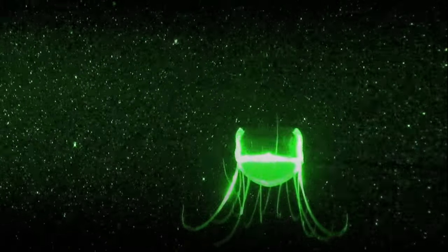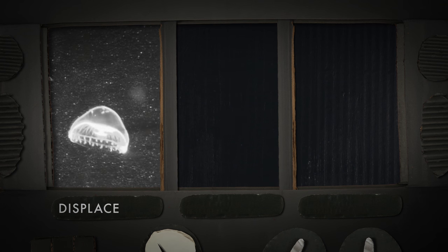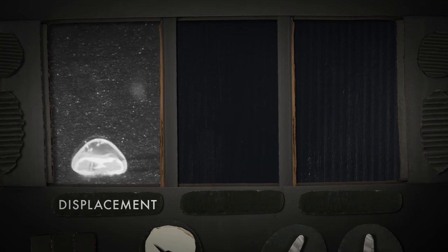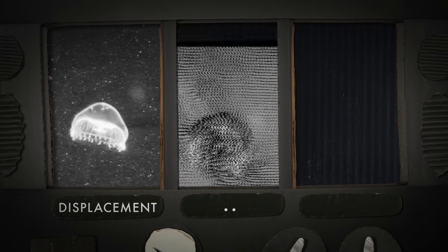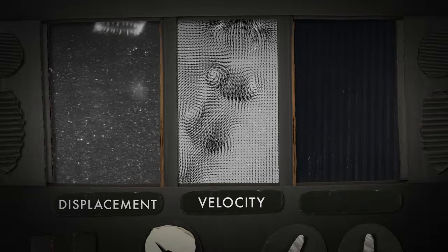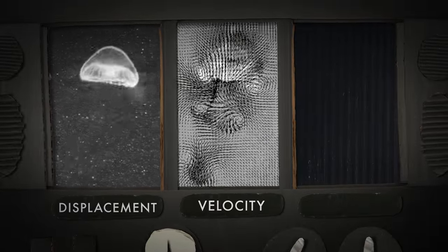And so we actually risk our lives to get this kind of data. What you're going to see is that on the left, these are particle images that show the displacement of fluid over time. And using that data, you can actually extract what the velocity of that fluid is, and that's indicated by the vector plots that you see in the middle.